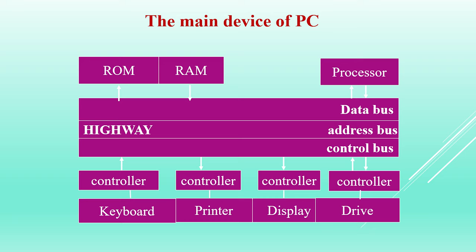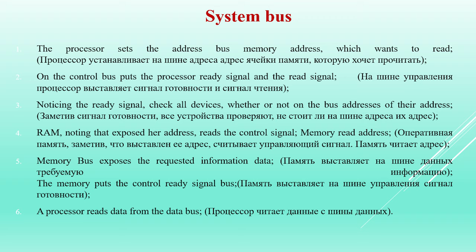Cache memory is a buffer memory unit. It is internal memory located inside the processor and is used to increase the performance of your computer by matching the operation of devices with different speeds — specifically, the exchange between the processor and the memory.